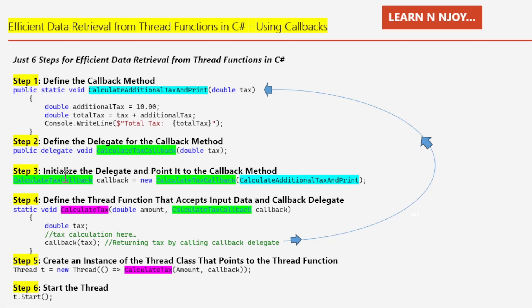Step 3: Initialize the delegate and point it to the callback method. I've created an instance of the 'CalculateTaxCallback' delegate and pointed it to the method 'CalculateAdditionalTaxAndPrint'. The statement reads: 'CalculateTaxCallback callback = new CalculateTaxCallback(CalculateAdditionalTaxAndPrint)'. That's how we initialize the delegate and point it to the callback method.